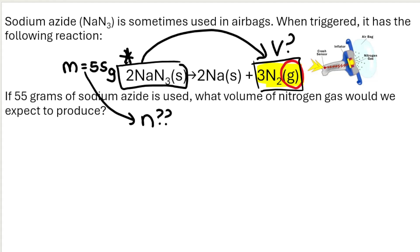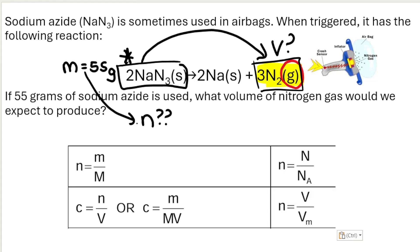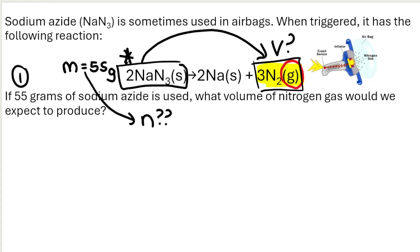And if you are aware of the formulas, you will know that the formula that makes the most sense to use in step one is this formula. So you write your blank formula down. I'm working at moles of NaN3. It's mass divided by molar mass. So my mass is 55 grams.